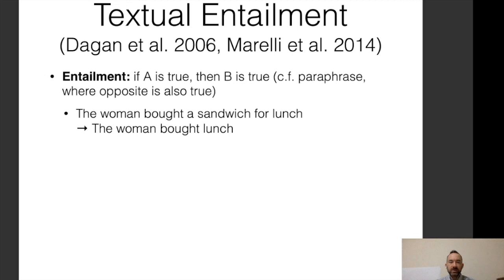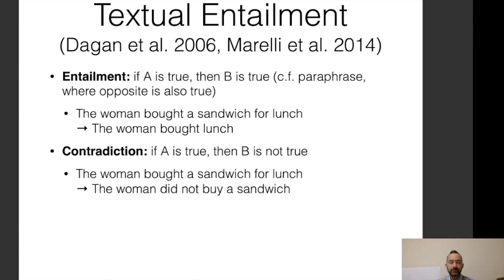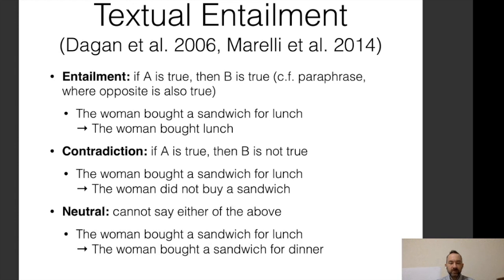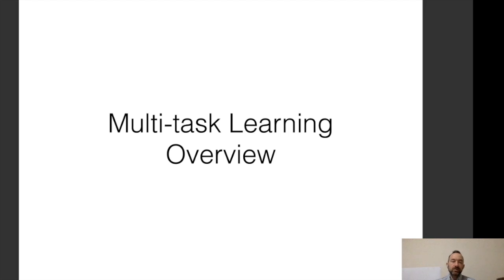Textual entailment tells you whether you can deduce the truth value of one sentence given another. If A is true, then B is true — but it's unidirectional. For example, 'the woman bought a sandwich for lunch' entails 'the woman bought lunch,' but not vice versa. There's also contradiction, where if A is true then B is not true, and neutral, where neither can be said — like 'the woman bought a sandwich for lunch' versus 'the woman bought a sandwich for dinner.'